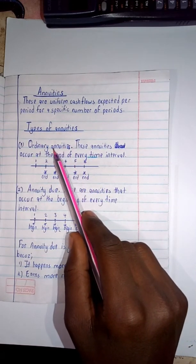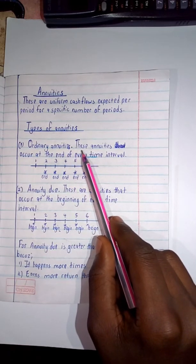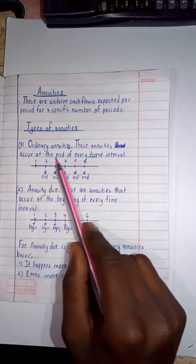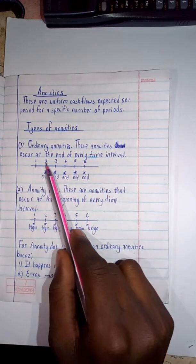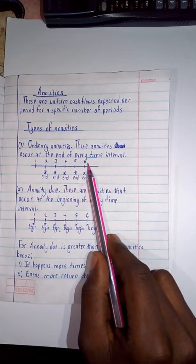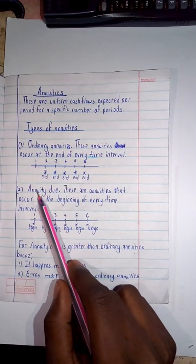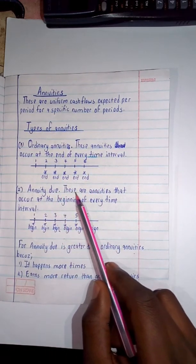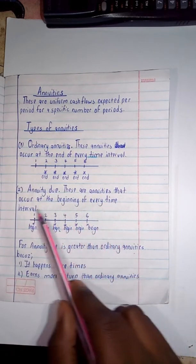With the types of annuities we have ordinary annuities. Now with this, these annuities occur at the end of every time interval. For example, if you're having one, two, three, four, five, six - they occur at the end. Then we're having annuity due. For annuity due, these are annuities that occur at the beginning of every time interval.